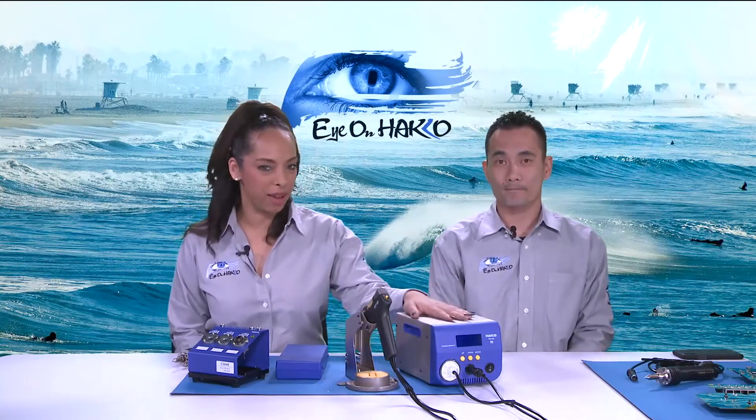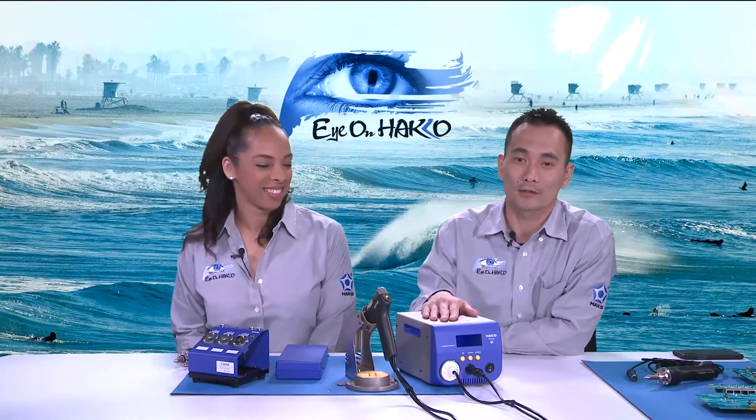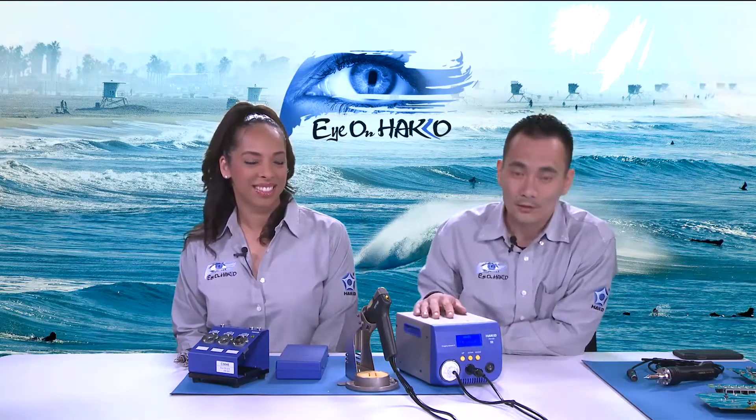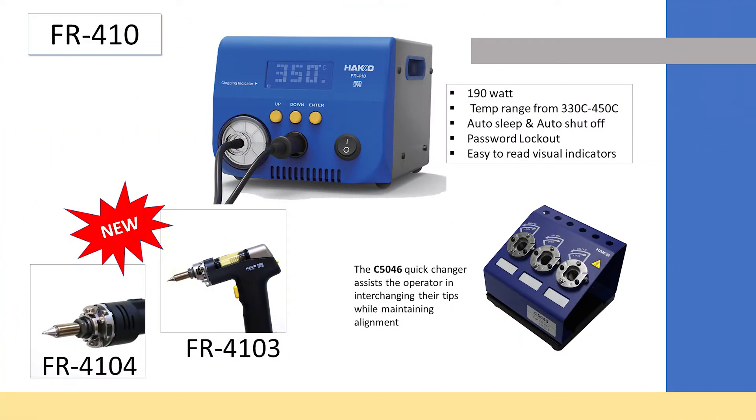So let's start with the hand piece. But before we get into the hand piece, we have the FR410 here. So I think it would only be appropriate to give a little refresher. Let's do a little recap on the FR410 desoldering station. The FR410 is a 190 watt desoldering station. It uses N61 nozzles.